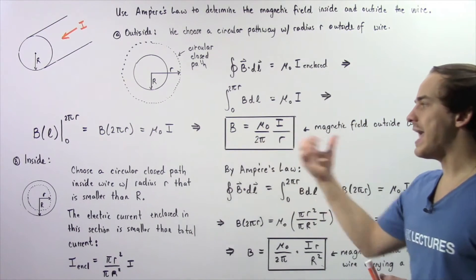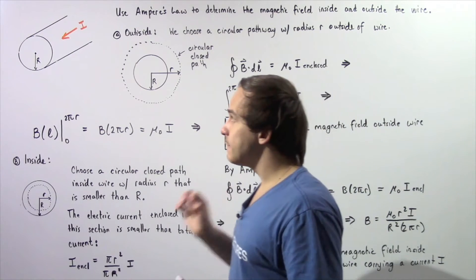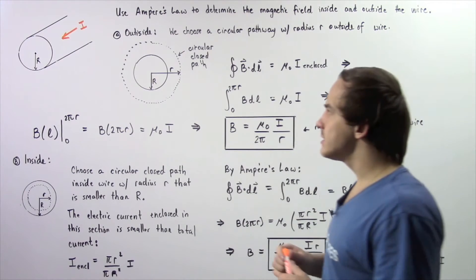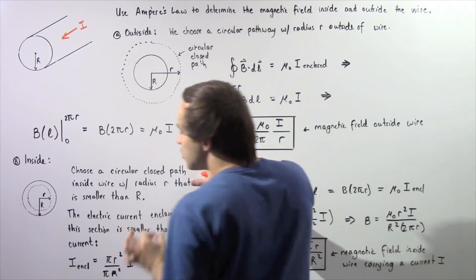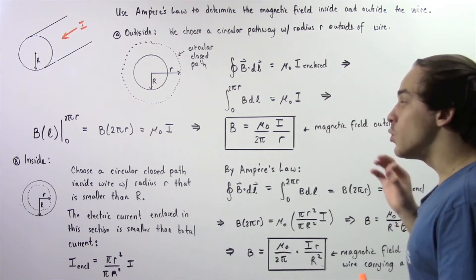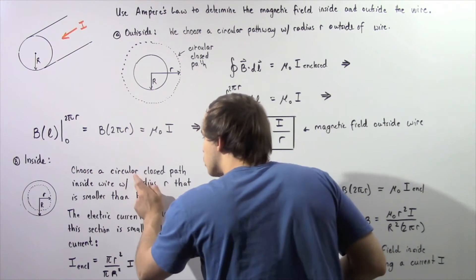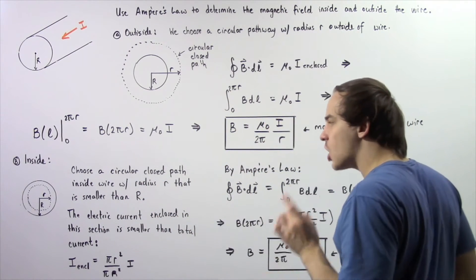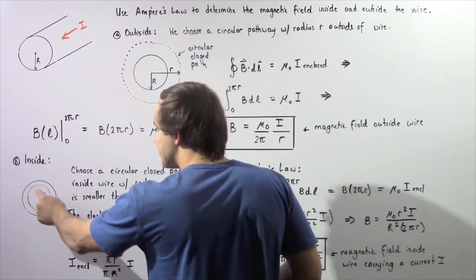This equation was given in the previous lecture. Now let's calculate the magnetic field at points inside our conducting wire. Examining the cross section of our wire, the radius is again given by uppercase R. To use Ampere's law we choose a circular closed pathway inside the wire with radius given by lowercase r, where lowercase r is now smaller than uppercase R.